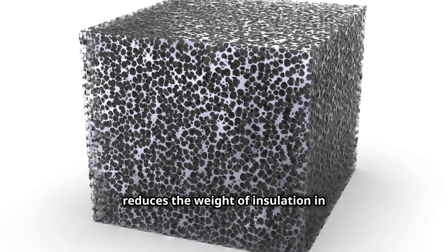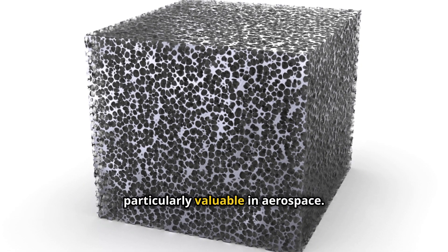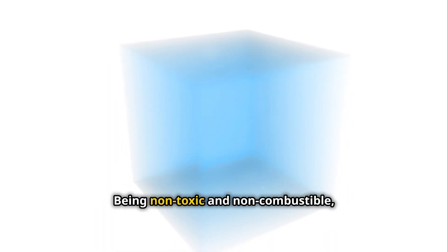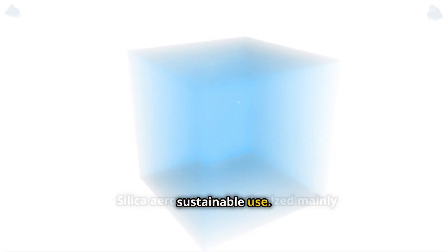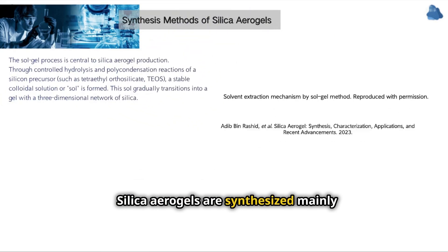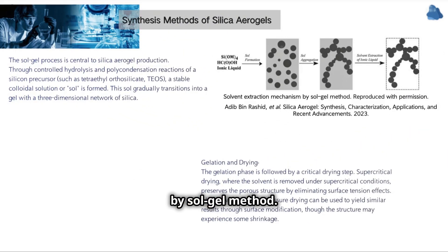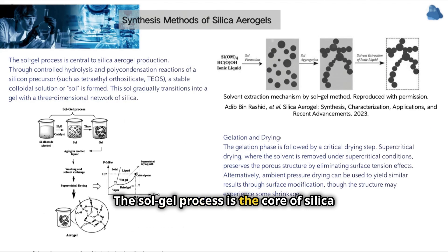Silica aerogels' ultra-low density reduces the weight of insulation in structural applications, particularly valuable in aerospace. Being non-toxic and non-combustible, silica aerogels are safer for widespread sustainable use. Silica aerogels are synthesized mainly by the sol-gel method.